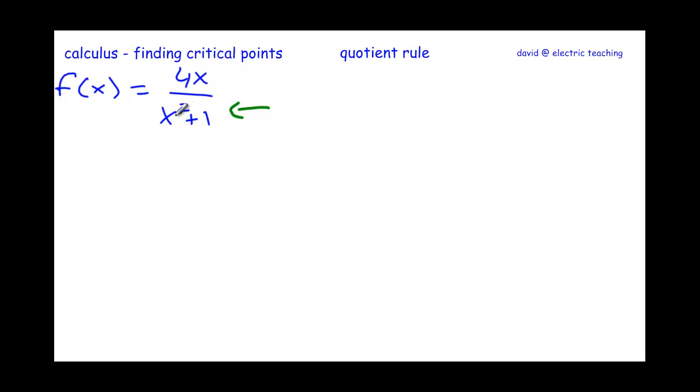If you square something, it's positive or 0, and if you add, there's no way you're back at 0. So just make sure you keep in mind there is no zeros down here, so there's no domain error at this moment. Let's take the derivatives using the quotient rule.